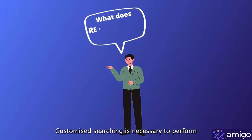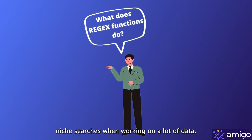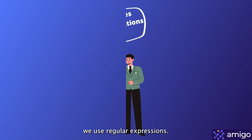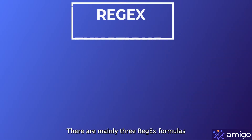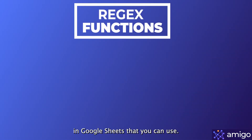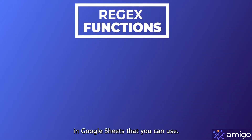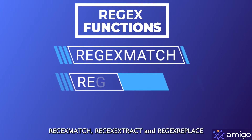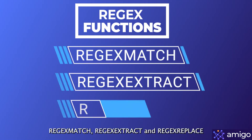Customized searching is necessary to perform niche searches when working on a lot of data. To achieve that, we use regular expressions. There are mainly three regex formulas in Google Sheets that you can use: REGEXMATCH, REGEXEXTRACT, and REGEXREPLACE.